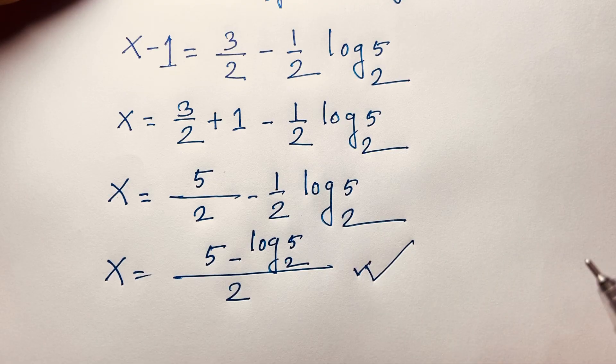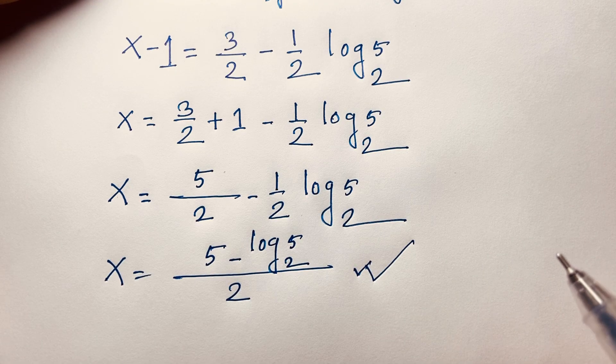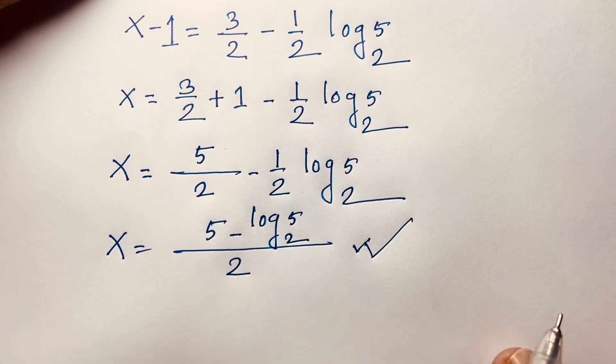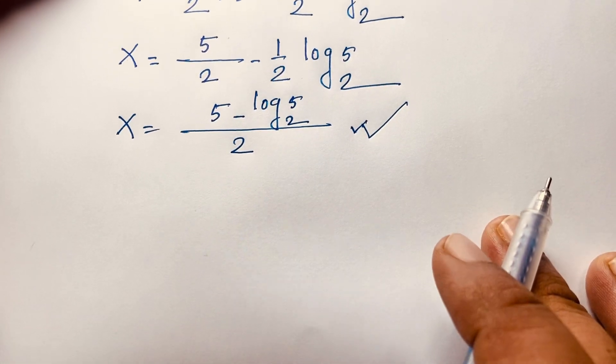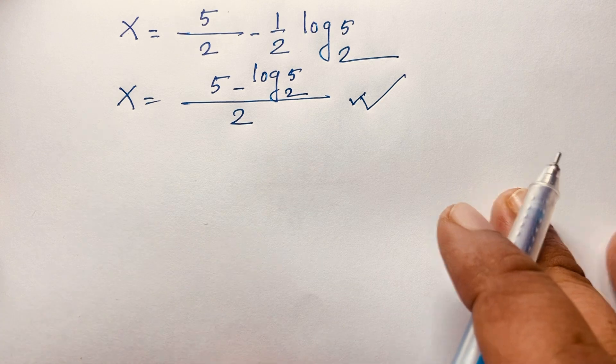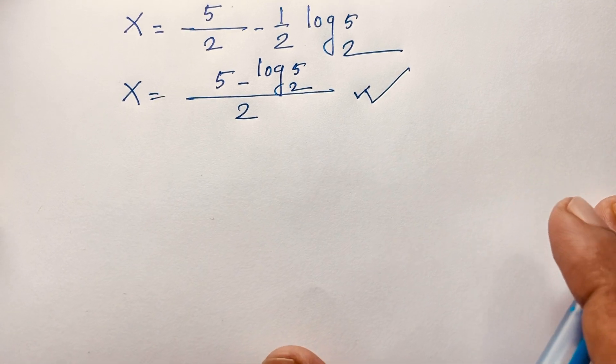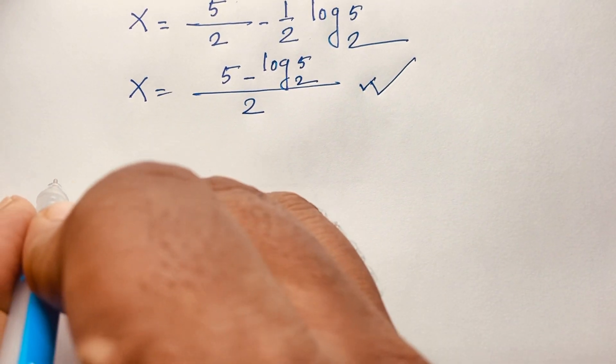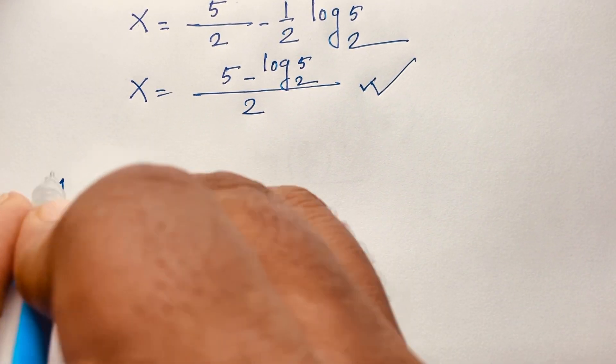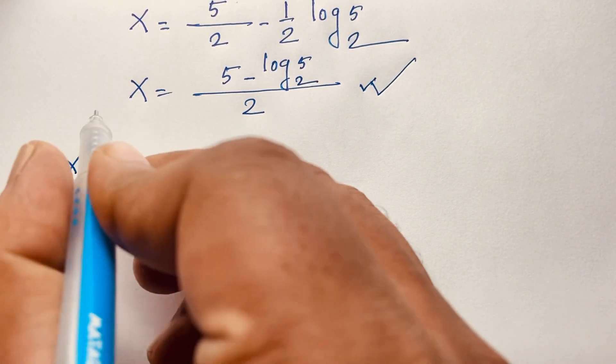This is our final answer: x equals 5 minus log 5 base 2, all over 2. Now let's verify by checking the original equation: 4 to the power x plus 1, minus 4 to the power x minus 1, equals 24.